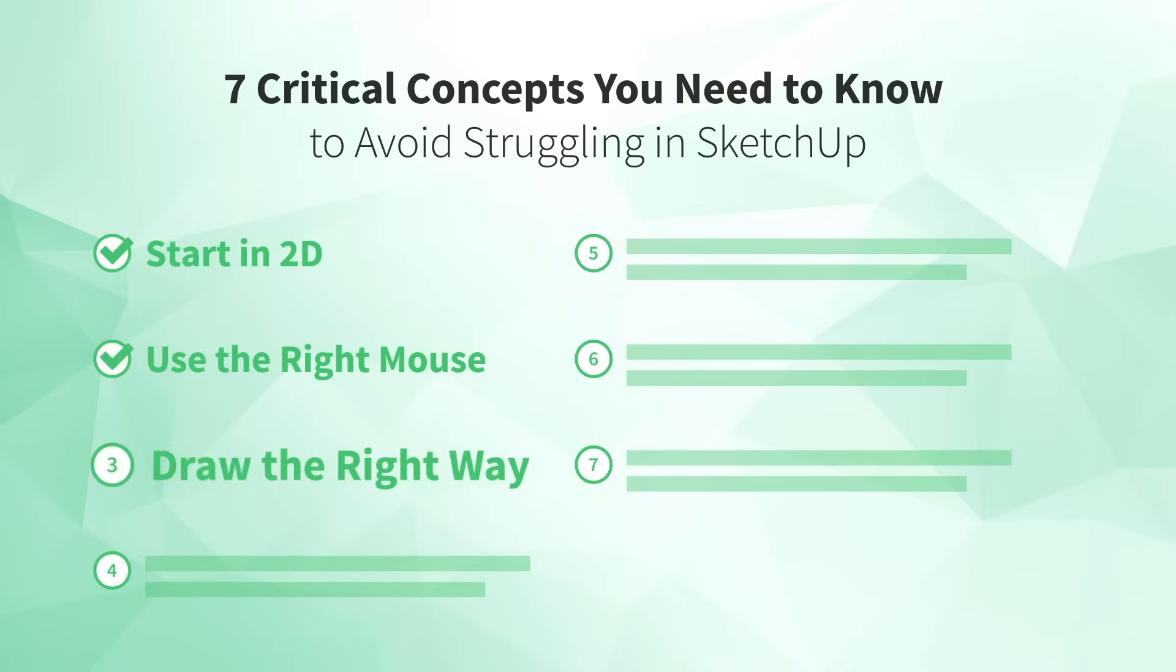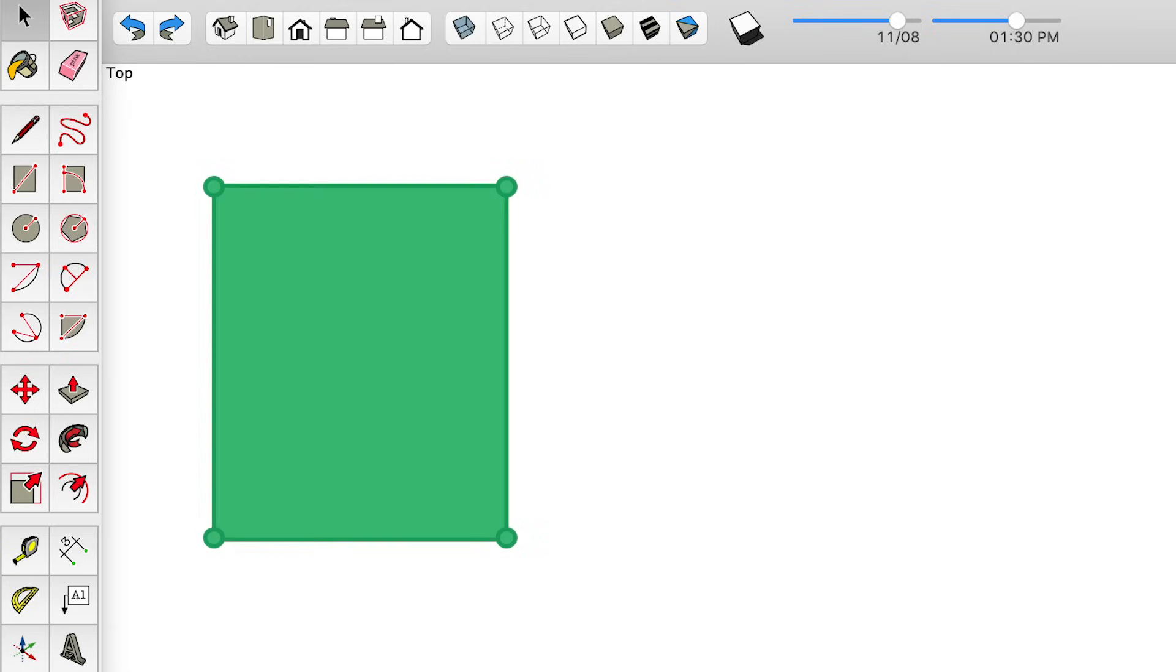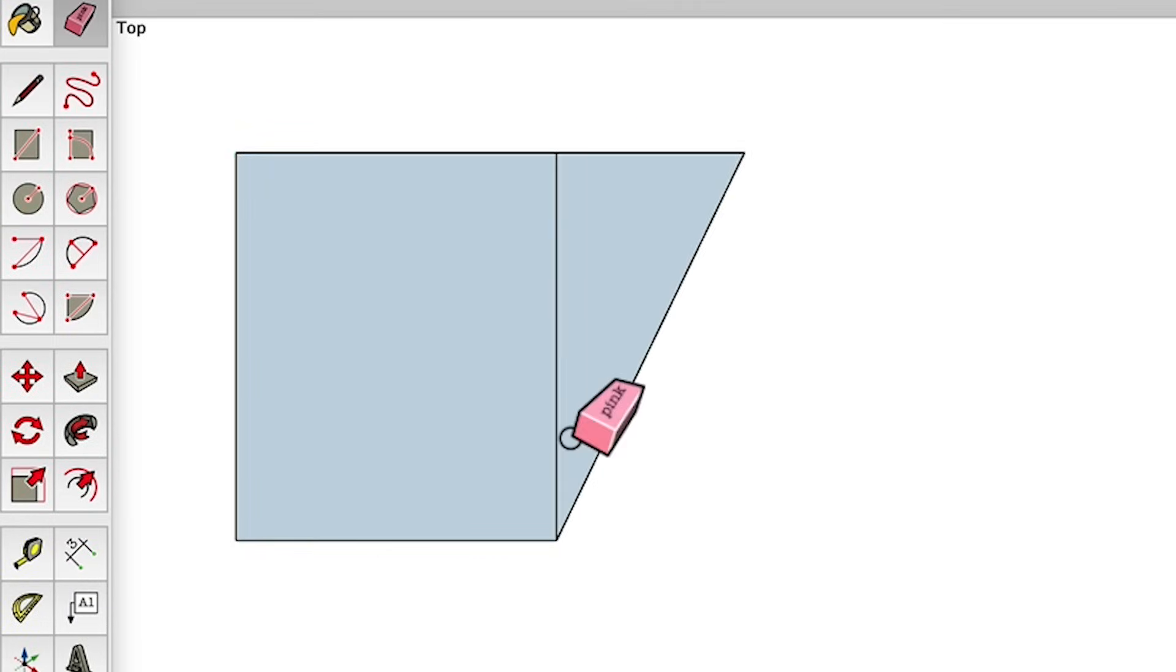Number three, draw the right way. When you draw in SketchUp, all the geometry you create consists of three things. Endpoints, edges, and faces. And most of SketchUp's tools are there to help you create, delete, or edit the position of those endpoints, edges, and faces. Easy enough, right?